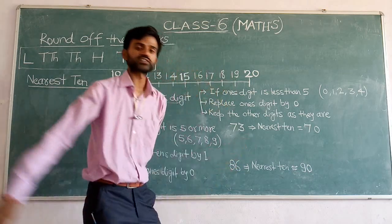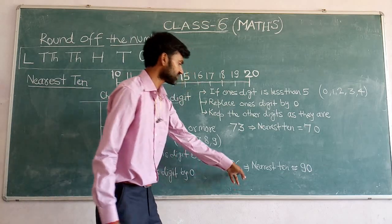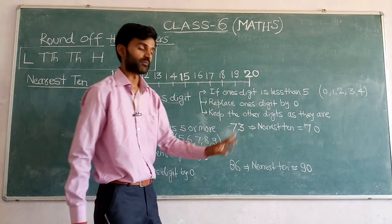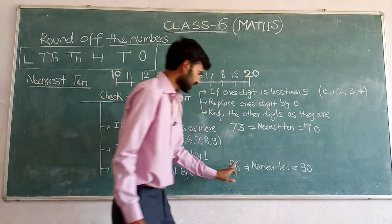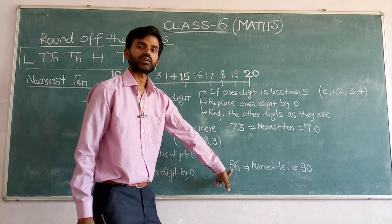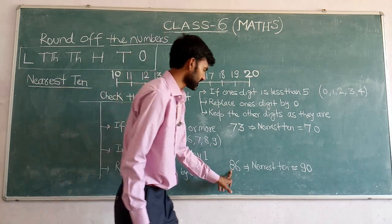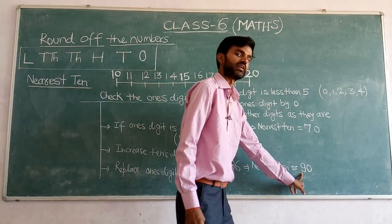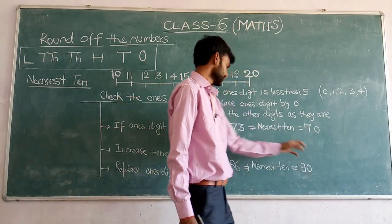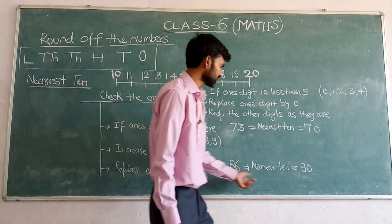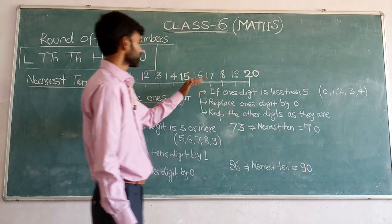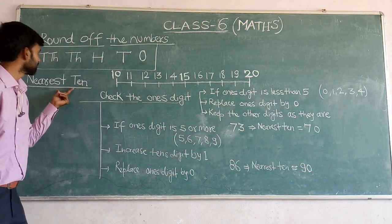For example, look at the number 86. Check the ones digit — it is 6, which is greater than 5. So increase the tens digit by 1. The tens digit is 8, so increase 8 by 1 to get 9, and replace the ones digit by 0. So the nearest ten of 86 is 90. This is the rule for finding the nearest ten.